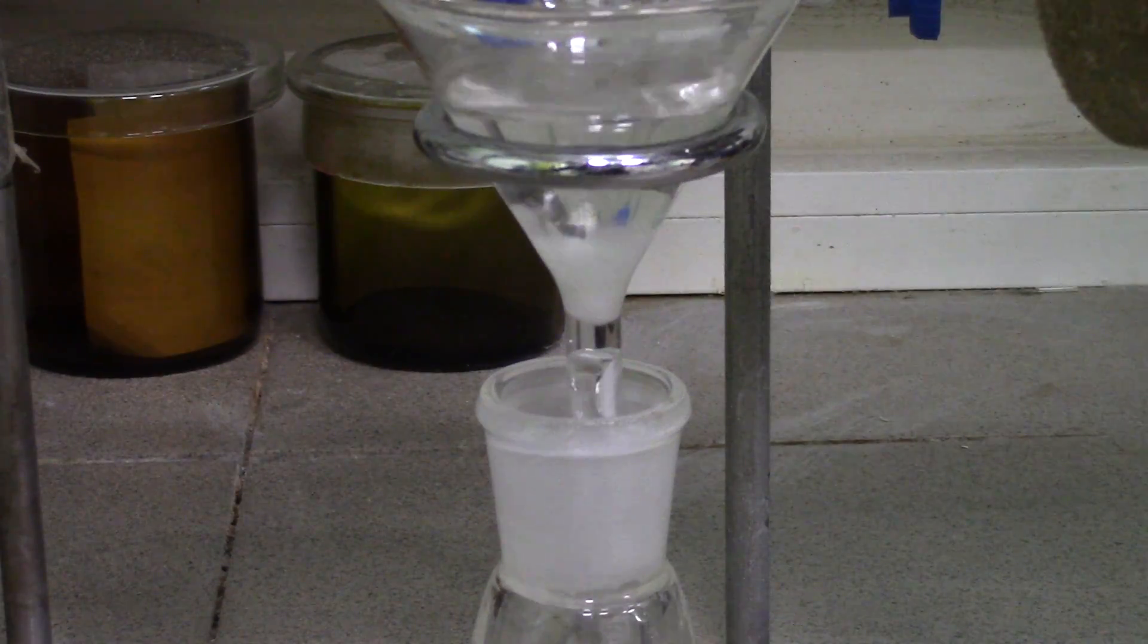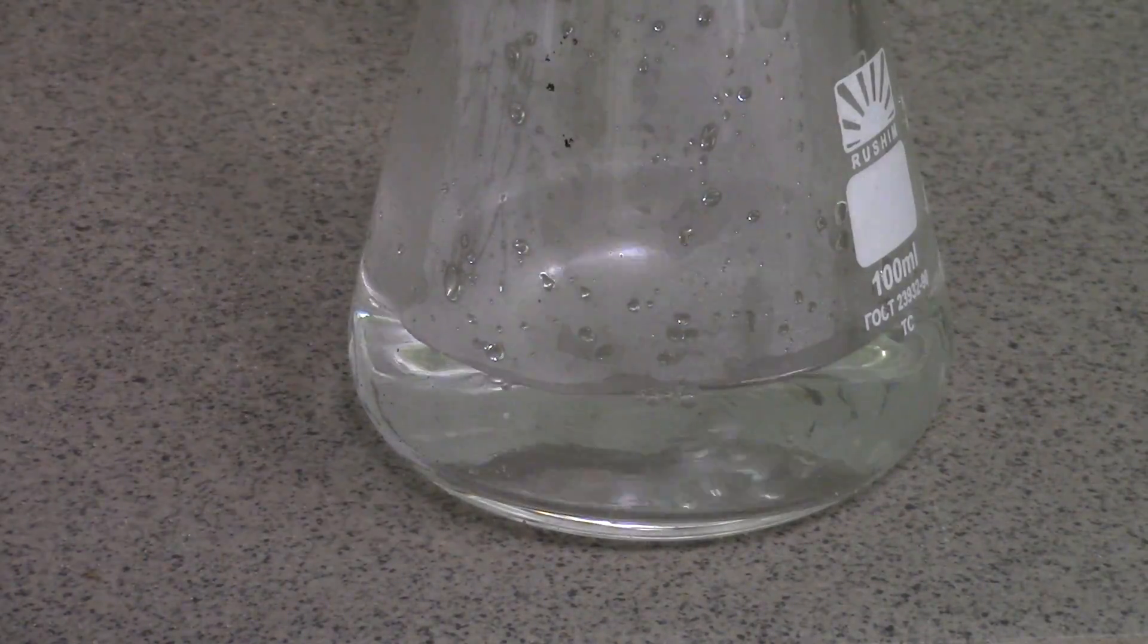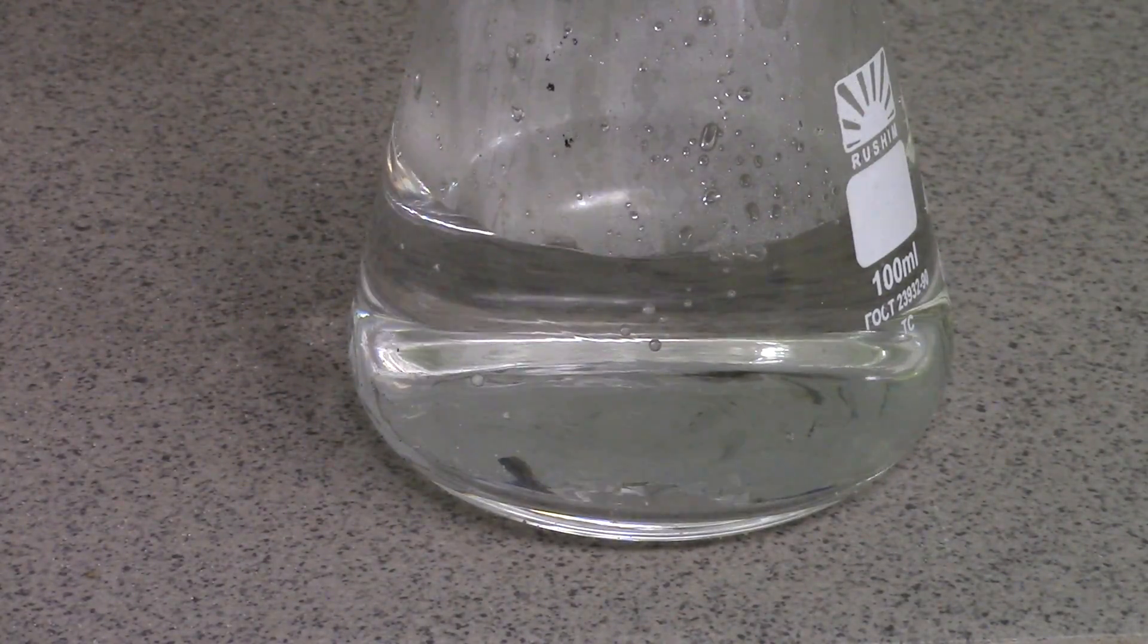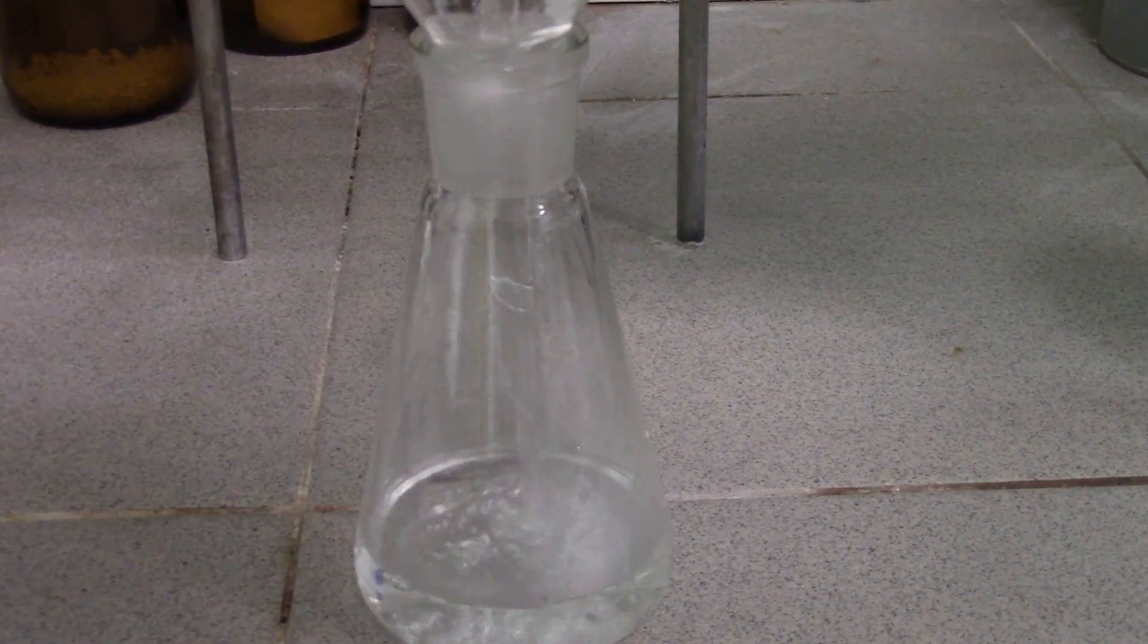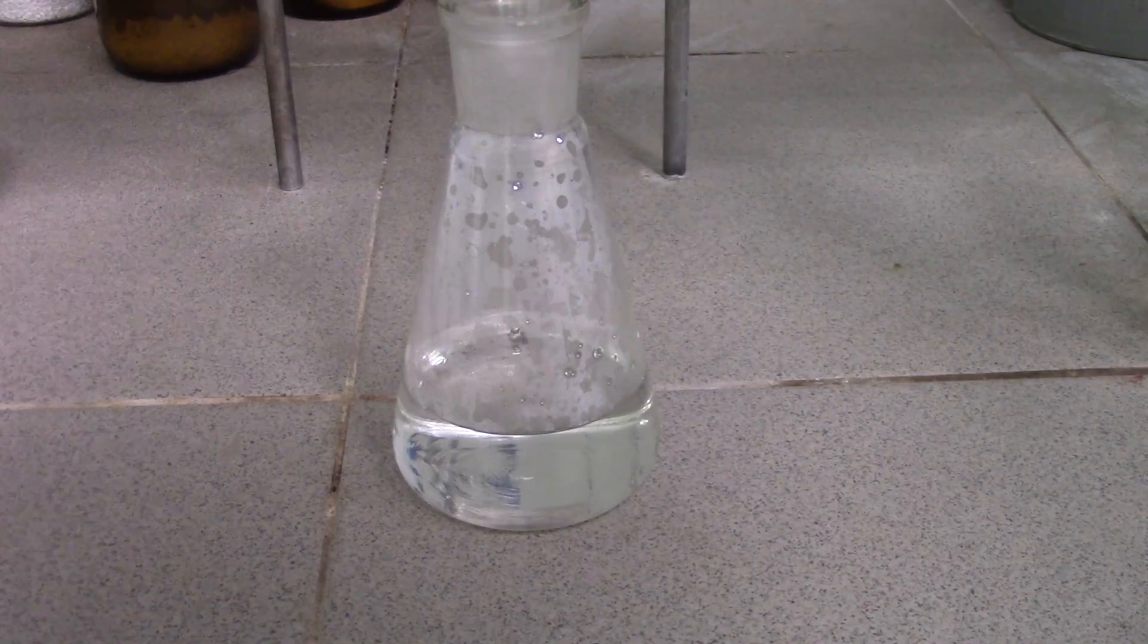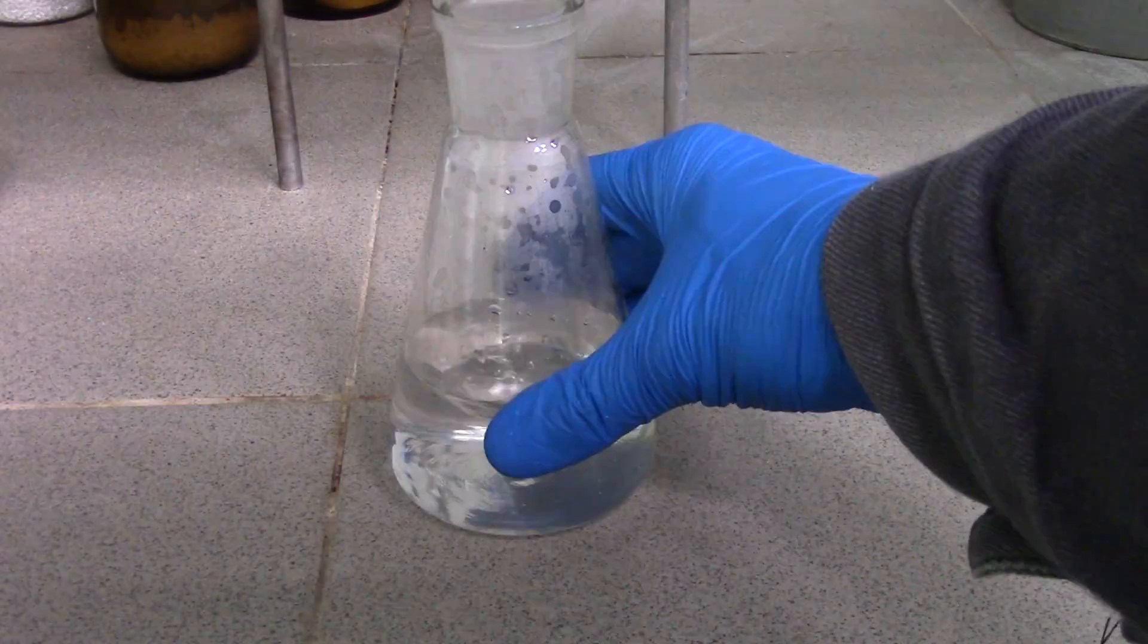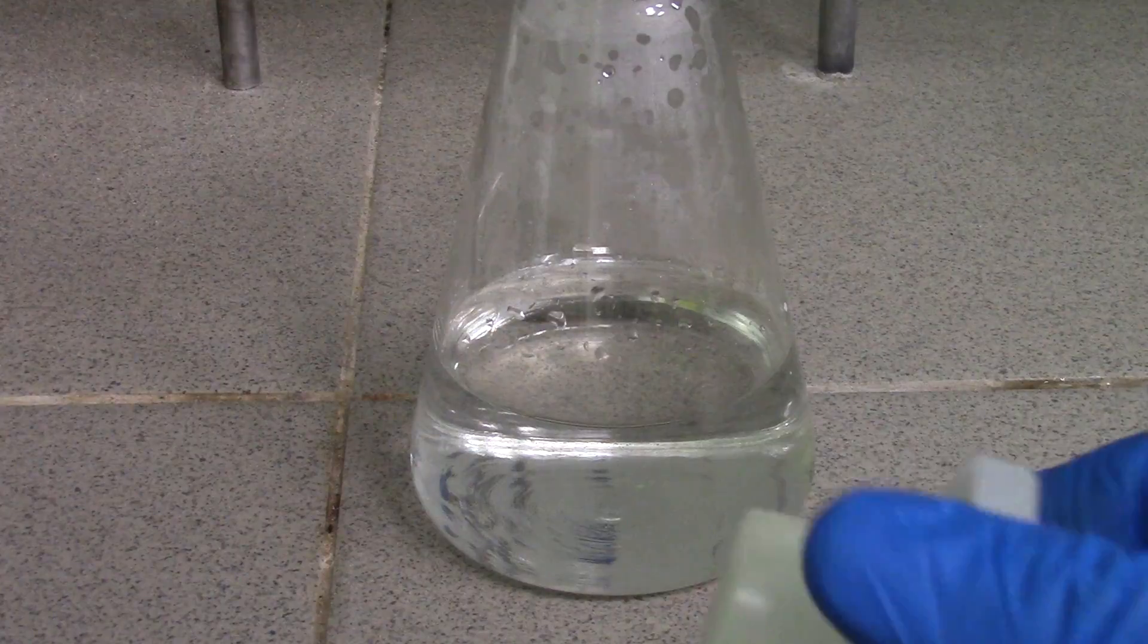So now just filter it off through a cotton ball and add 15ml of ethanol to provide crystallization of pure tetraborate, because it's insoluble in it. Then put the flask into fridge overnight.